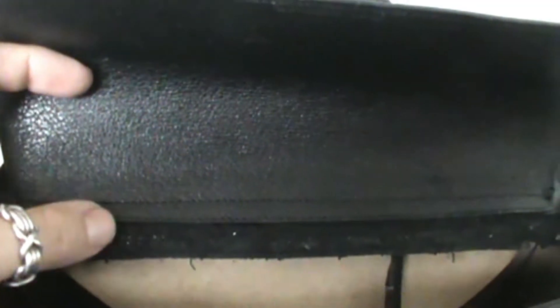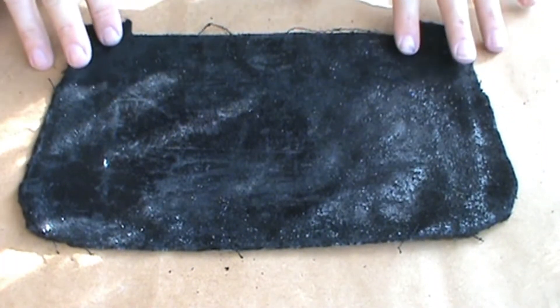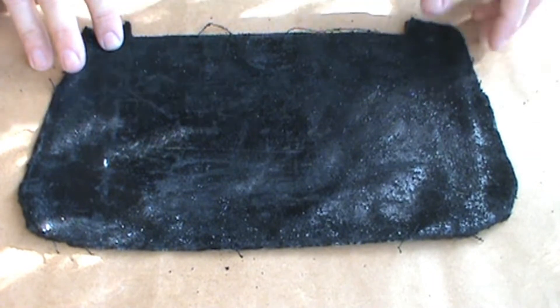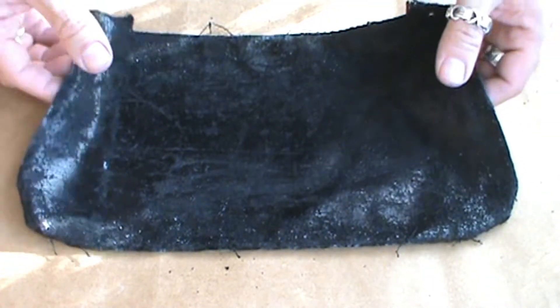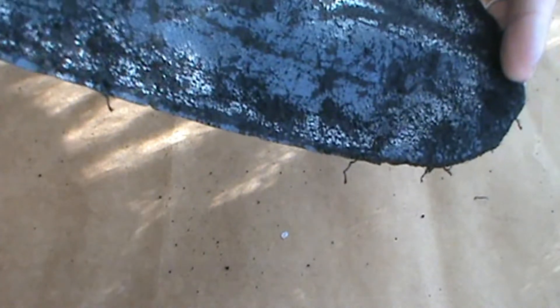So unlike the Gucci backpack, you cannot turn this over, you cannot turn it inside out, so that you can access the lining. So this lining will have to be put in there as a sleeve and then sewn to the very edge here. So here you're looking at the back panel of the lining, the original lining. As you can see it's kind of shiny and it feels like suede but it's actually just fabric.